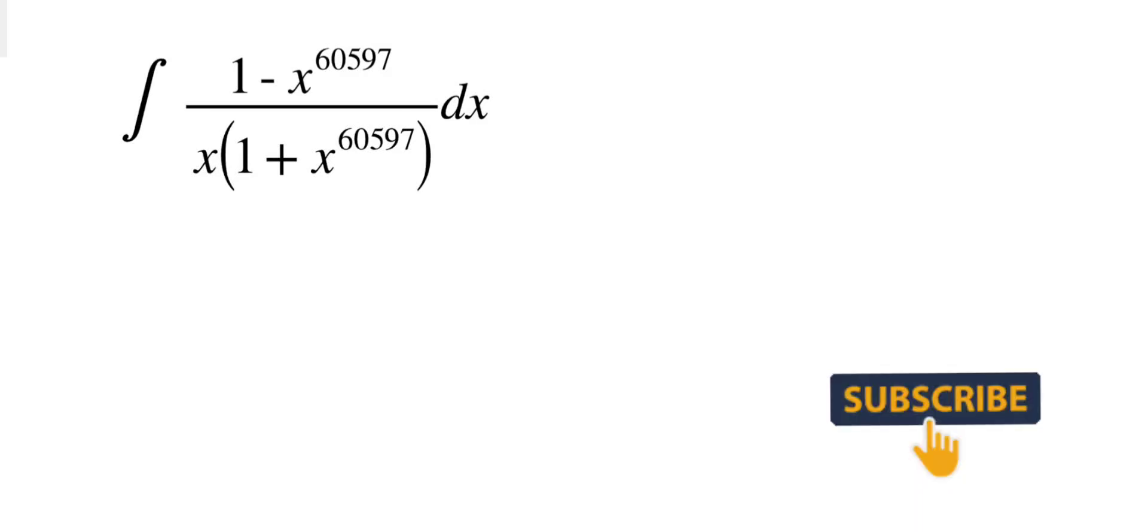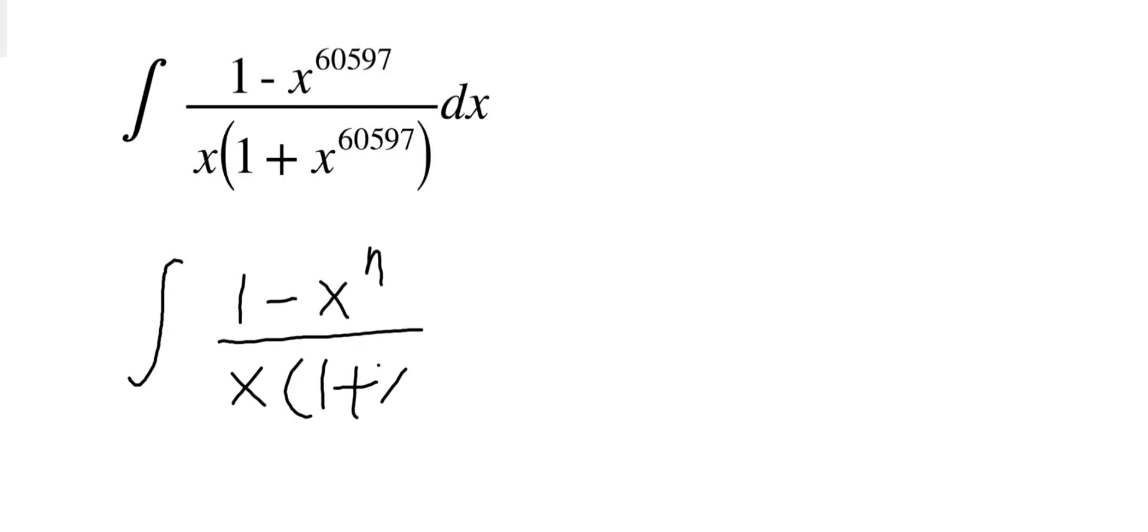What we will try is to simplify the general case, which is the integration of (1 - x^n) / (x(1 + x^n)). If we succeed in simplifying this general case, then we'll just put the value of n = 60597 in the answer and we are done. So let's try.